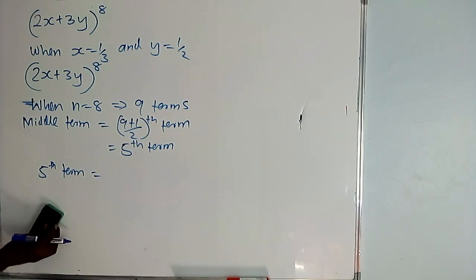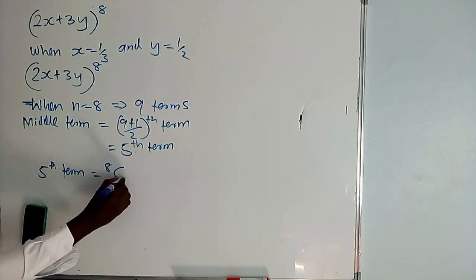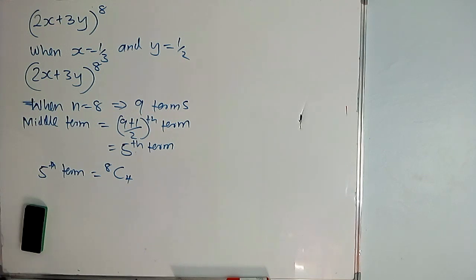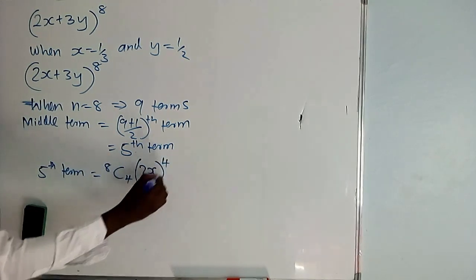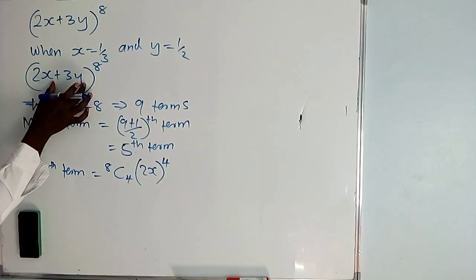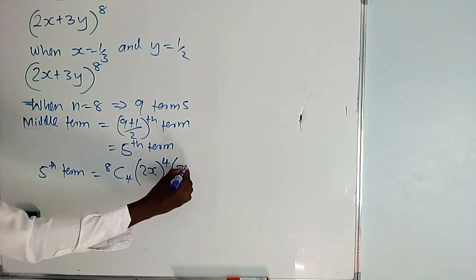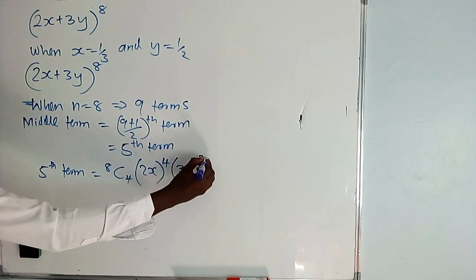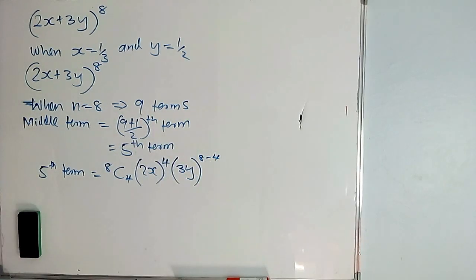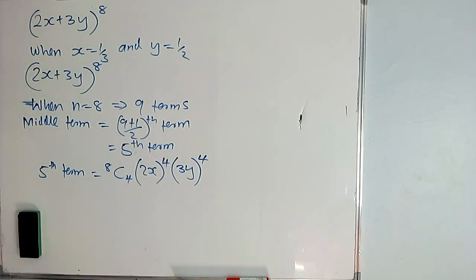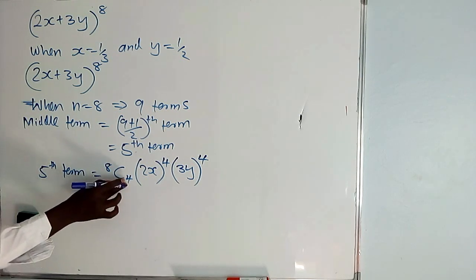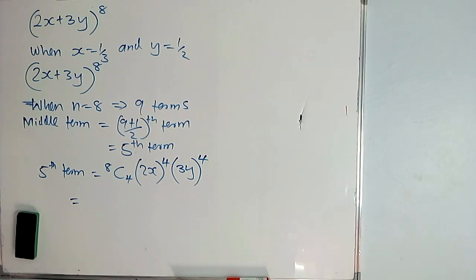So the fifth term is power 4. We have n combination 4, and r is equal to 4. Then the first term in the bracket is 2x, so 2x is raised to power n minus 4, which is 8 minus 4. Then the next term inside the bracket is positive 3y, raised to power 4. When you add the powers they must give you n — meaning 4 plus 4 must give you n equals 8. So go to the calculator and give me the coefficient of 8 combination 4.